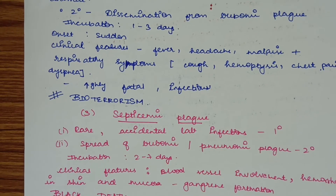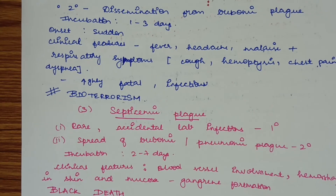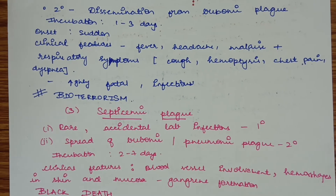Additionally, there will be respiratory symptoms such as cough, chest pain, dyspnea, and hemoptysis. Pneumonic plague is more fatal and infectious. It is also an agent of bioterrorism.